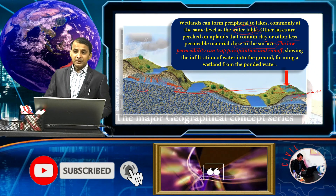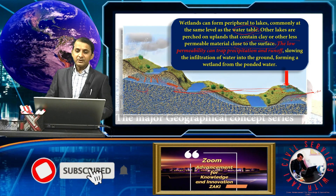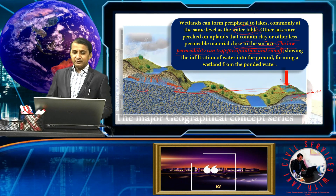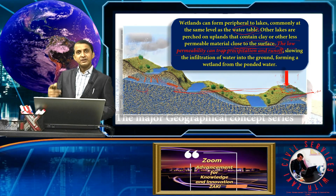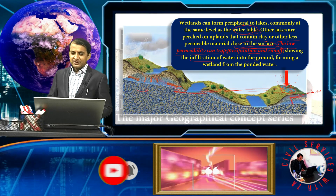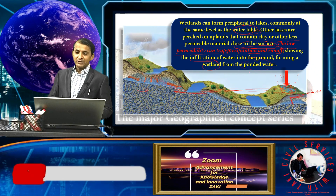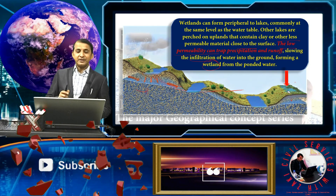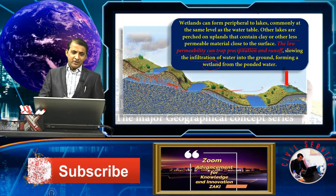Where permeability is low, material close to the surface traps precipitation and runoff due to low permeability, slowing or stopping infiltration of water into the ground. This forms a wetland or ponded water. These represent the basic relationship between ponded lakes and groundwater.